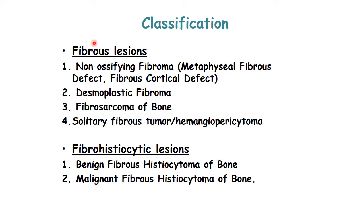Regarding the classification of these lesions, we have the group of fibrous lesions and the group of fibro-histiocytic lesions. Fibrous lesions include non-ossifying fibroma (also known as metaphyseal fibrous defect or fibrous cortical defect), desmoplastic fibroma, primary fibrosarcoma of bone, and solitary fibrous tumor, previously known as hemangiopericytoma. Fibro-histiocytic lesions include benign fibrous histiocytoma of bone and primary malignant fibrous histiocytoma of bone.